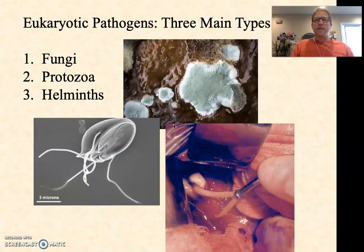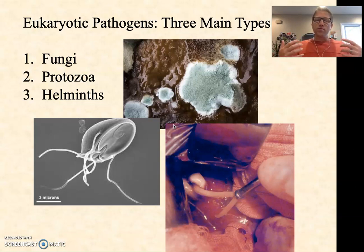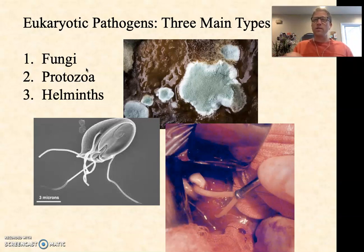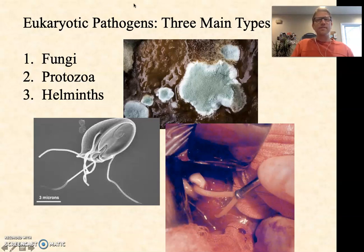There are three main types of eukaryotic pathogens, and we need to understand eukaryotes for a couple of reasons. One, because human beings are eukaryotes — and hopefully your anatomy and physiology courses really emphasize the eukaryotic nature of human beings. But there are also some pathogens that are eukaryotic: the fungi, the protozoa, and the helminths. In this video we'll talk about the fungi; in the next two, we'll talk about the protozoa and the helminths. You can tell this is a mold here, this is a protozoan — that's Giardia — and here is a helminth, in this case a worm coming out of a person's liver.